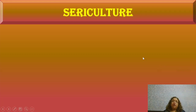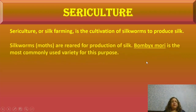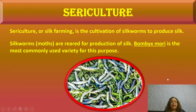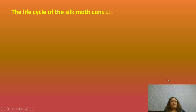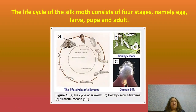The third agro-complementary occupation is sericulture, or silk farming — the cultivation of silkworms to produce silk. Bombyx mori is the most commonly used worm. The life cycle of the silk moth consists of four stages: egg, larva, pupa, and adult.